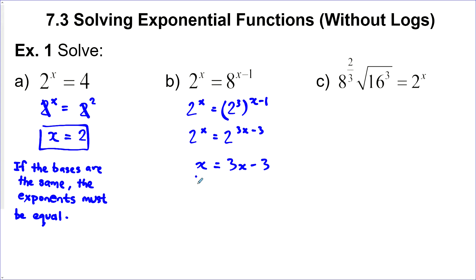So, minus x on both sides, plus 3 on both sides. I get 3 is equal to 2x. Divide by 2 on both sides, I get x is equal to 3 over 2.